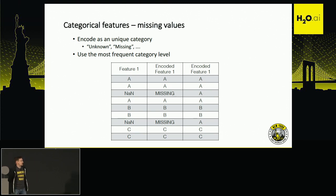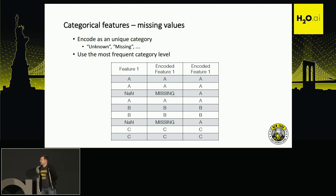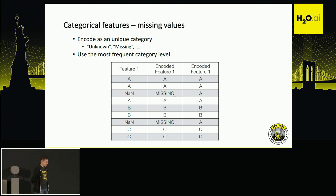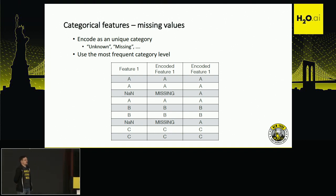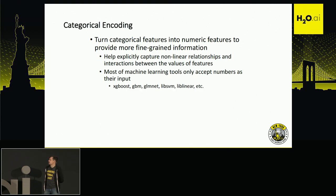The same goes for categorical features. One of the easiest approaches is to treat the missing value as a new category level. But if you know that a missing category doesn't carry additional information, you can use the most frequent category to replace the missing values — in this example, that would be category A.